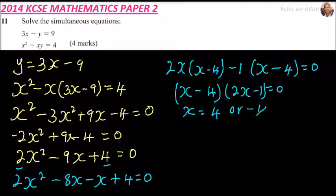When x equals 4, we have y equals 3 times 4, that is 12, minus 9, which gives you 3.